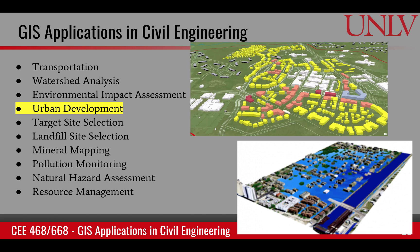Another example is urban development, where most of the urban planning and development today is done using GIS. There's a special wing in all urban offices that handles and creates GIS data. For example, for Clark County, we have the GIS Management Office, or Gizmo, and they maintain all of the data about streets, buildings, and parcels. You can go and download that data if you were a developer trying to develop a new location, or a researcher trying to understand how the city has expanded. If you were trying to understand how water will flow within an urban city, you need to know how the urban terrain is changing from point to point.